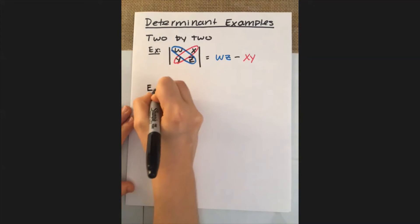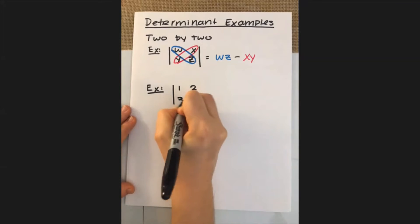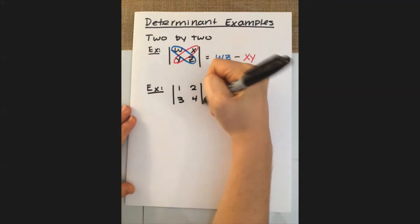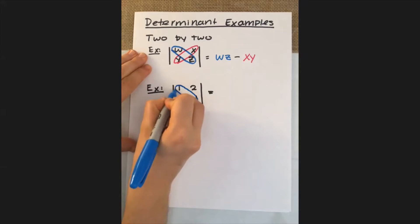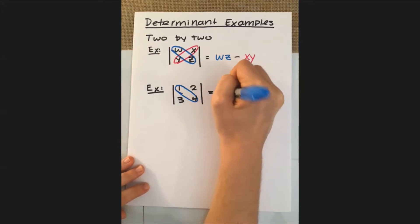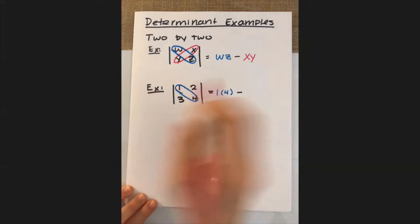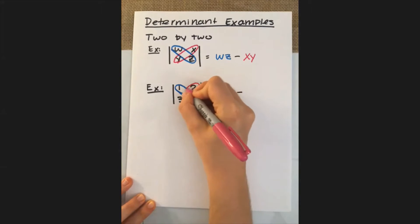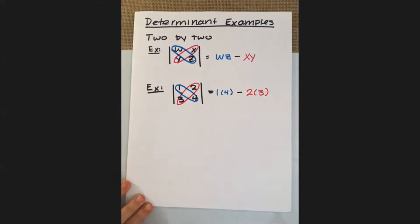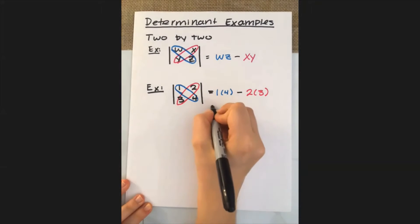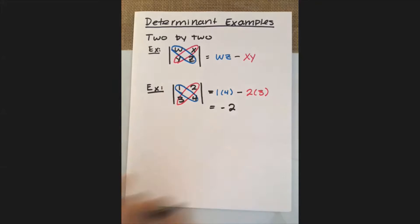Let's go ahead and work an example with some real numbers. We can do the matrix 1, 2, 3, 4. We're going to apply the exact same idea: look at the first diagonal and take its product, so we get 1 times 4, and then we subtract off the product from the other diagonal, which is 2 times 3. Simplifying that down, you wind up with negative 2 as this 2x2 determinant.